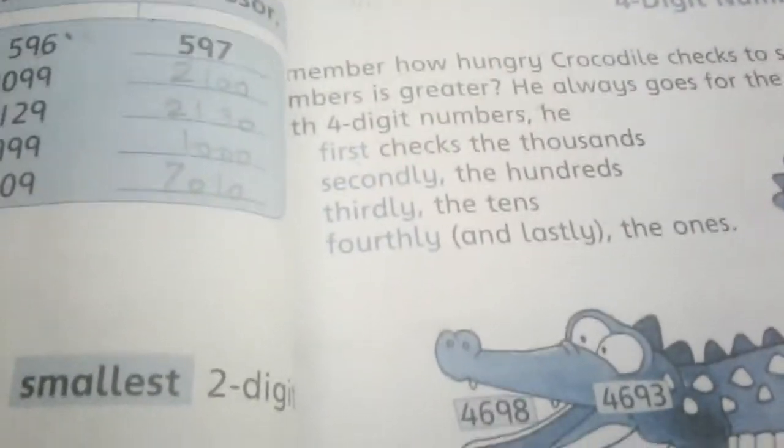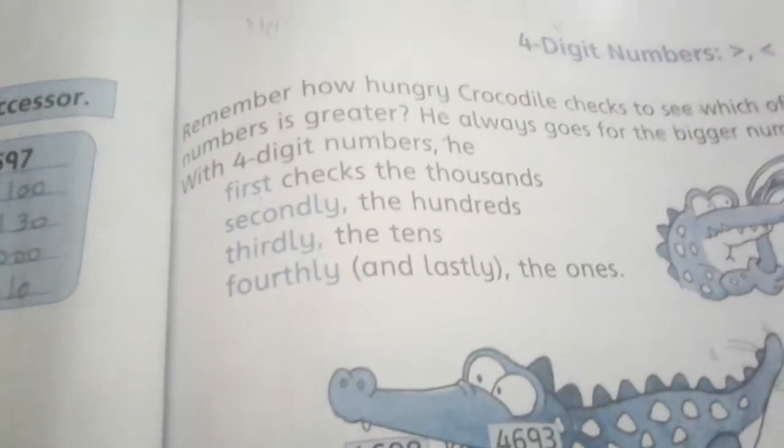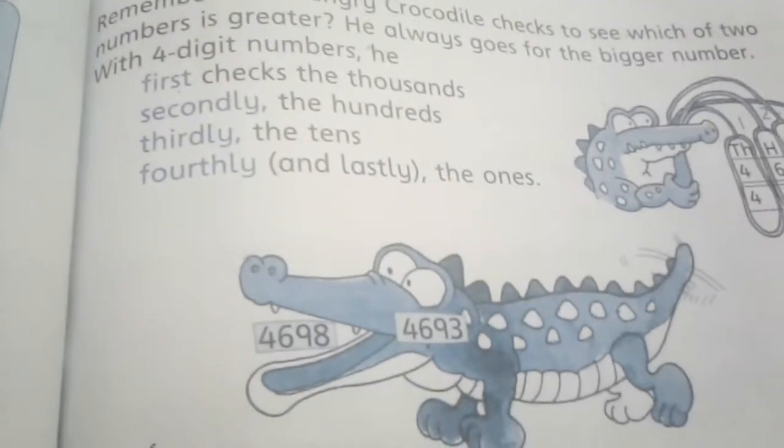Four digit numbers, page number 35. You can see the Crocodile here.